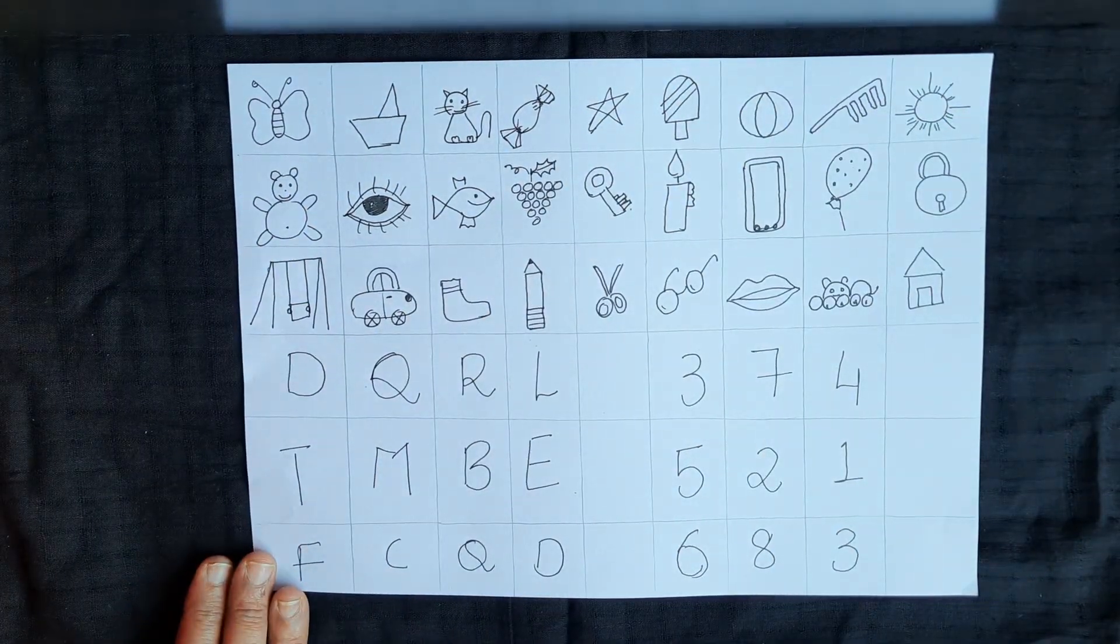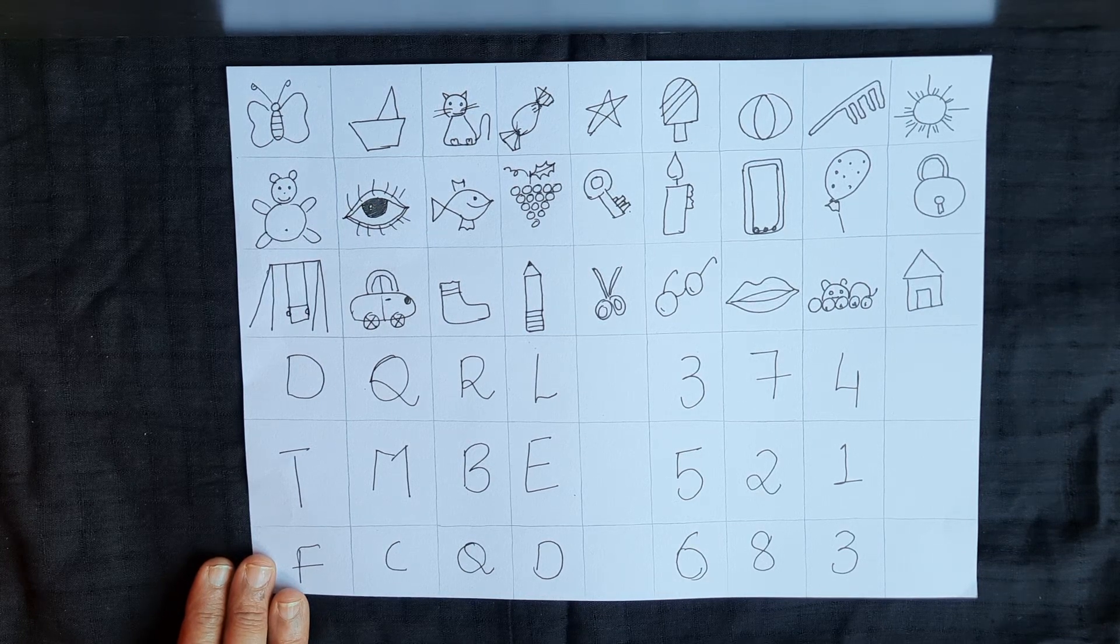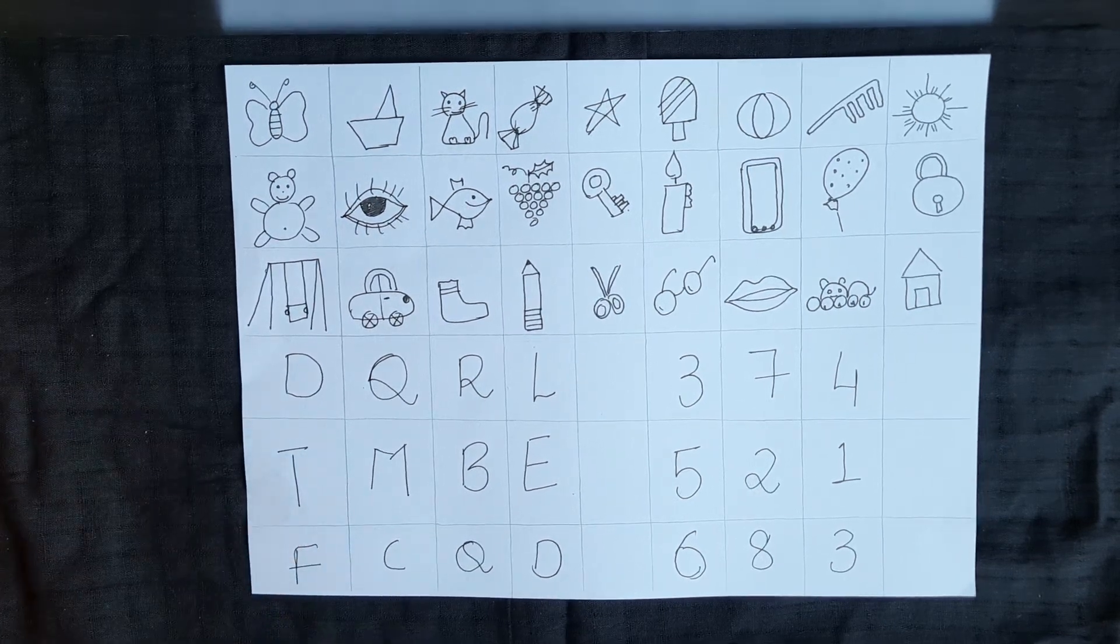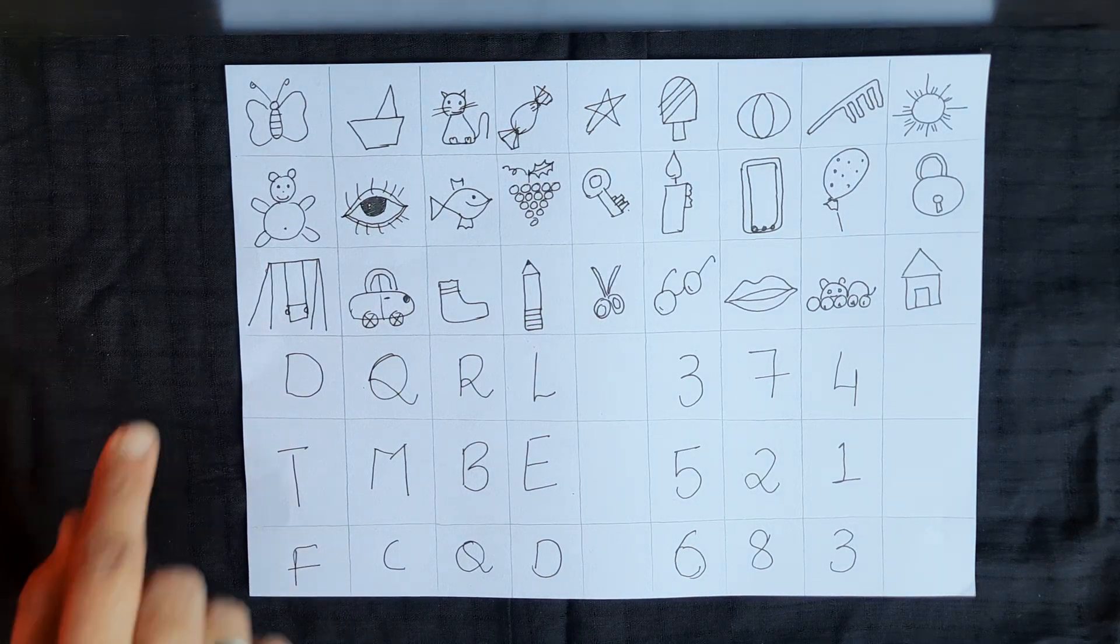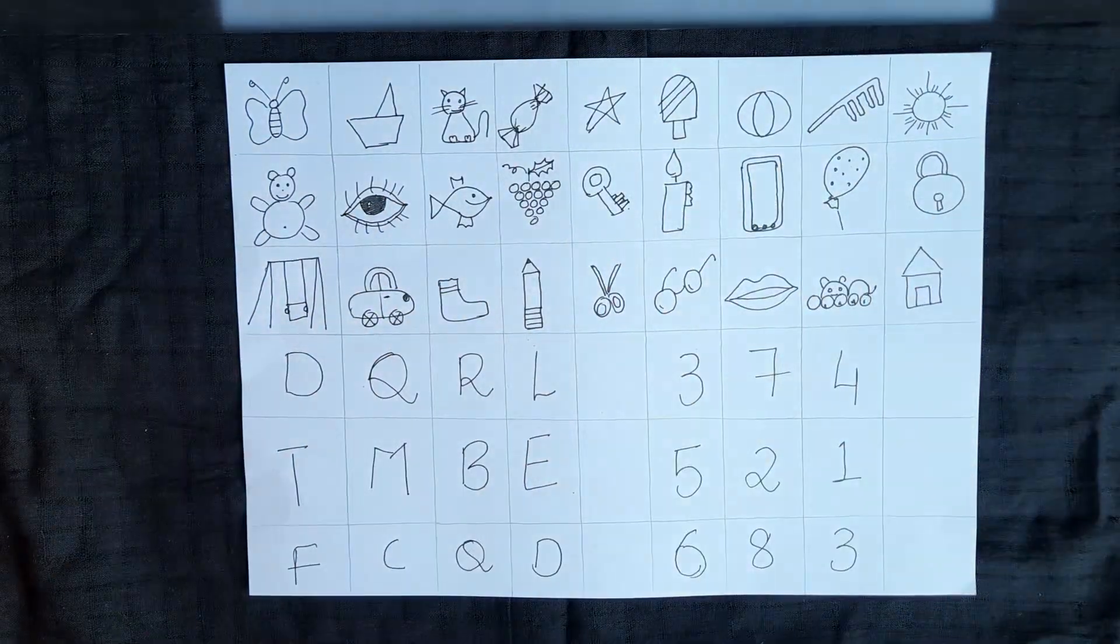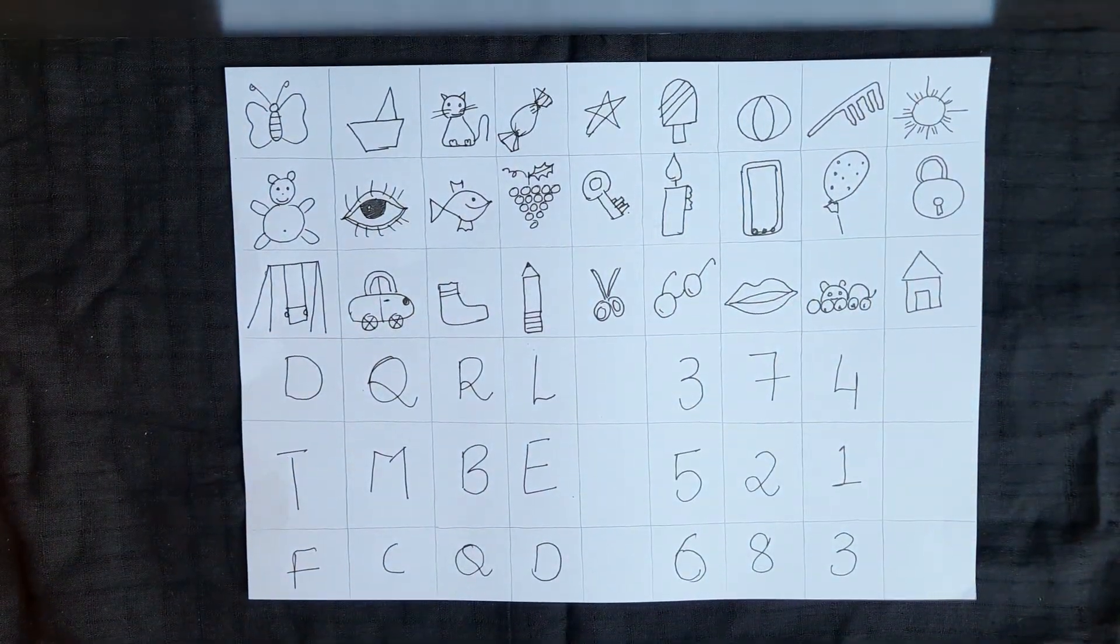What are the games we can play? The first game that we play is something called rapid naming. The child has to quickly name one after the other whatever is the picture or the alphabet or the word or the number that is written there. So they go butterfly, boat, cat, chocolate, star, ice cream, ball, comb, sun.